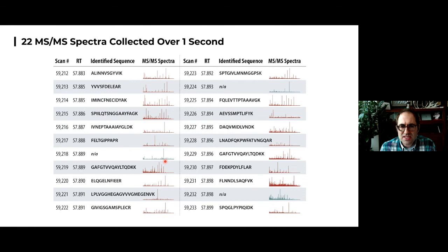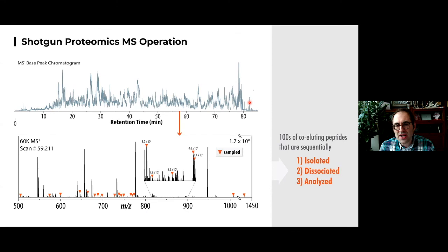We've now done this experiment 20 times per second, and over an hour or two we can collect tens of thousands or 100,000 tandem mass spectra. You can really generate tons of data very quickly.